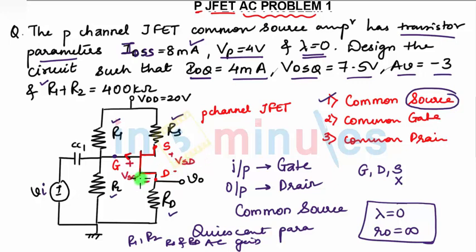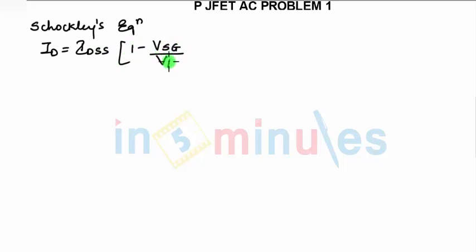Right, now solving using the Shockley equation. You know the Shockley equation is ID equals to IDSS times [1 minus VSG by VP] whole square. Now VSG, why we are writing it as VSG? Since it is P-channel. If it had been N-channel, we would have written it as VGS. What is the value of ID given in the question?